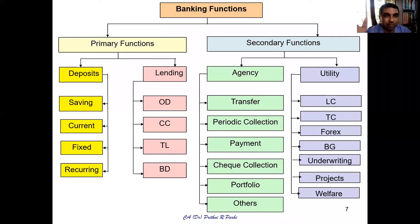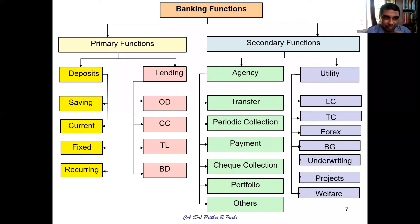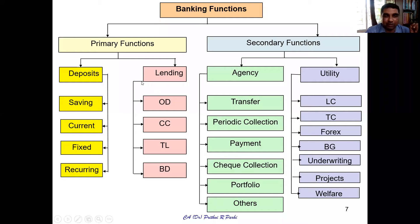Saving deposits, current deposits, fixed deposits, and recurring deposits — these are the various deposit products available. Coming to the lending side, this is also one more important function of the bank. The first lending product is OD — can you guess what OD means?